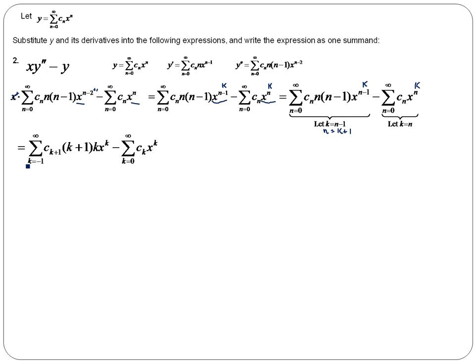Here I've made my change of variable. Notice that if n is zero, then k is going to be negative one. So this first summation starts at negative one. And wherever I see n, I'll replace it with k plus one. My subscript on my c becomes k plus one. This n that I have up here becomes k plus one. And n minus one is the same as k. That's my k. And my exponent on the x becomes k, x to the k.